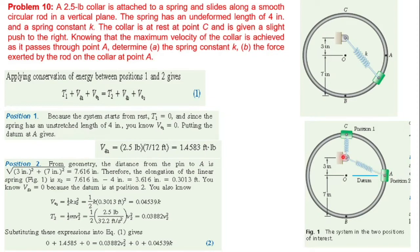To find the spring deformation at point A, we use the triangle geometry. The triangle has sides of 3 inches and 7 inches — wait, we take 3 inches squared plus 7 inches squared and take the square root to find the deformed spring length at A. Then we subtract the undeformed length to get the deformation x₂.